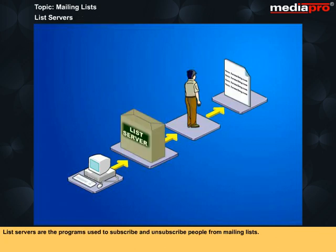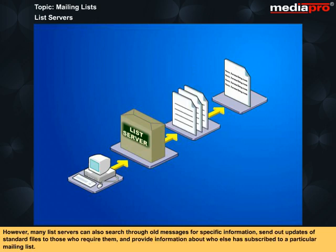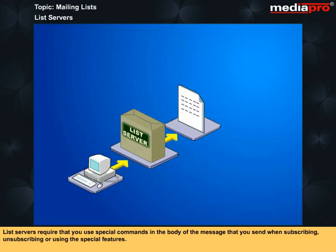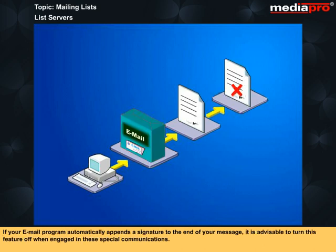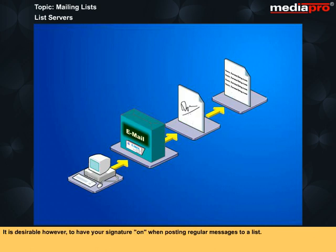List servers are the programs used to subscribe and unsubscribe people from mailing lists. However, many list servers can also search through old messages for specific information, send out updates of standard files to those who require them, and provide information about who else has subscribed to a particular mailing list. List servers require that you use special commands in the body of the message that you send when subscribing, unsubscribing, or using the special features. If your email program automatically appends a signature to the end of your message, it is advisable to turn this feature off when engaged in these special communications. It is desirable, however, to have your signature on when posting regular messages to a list.